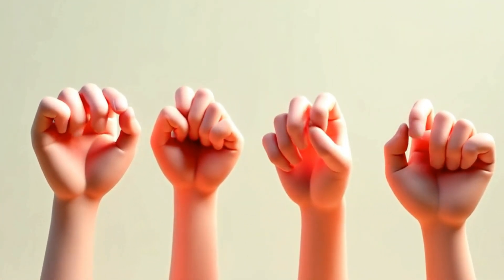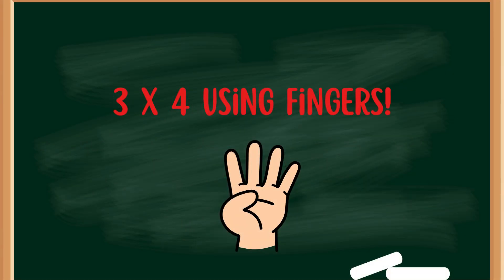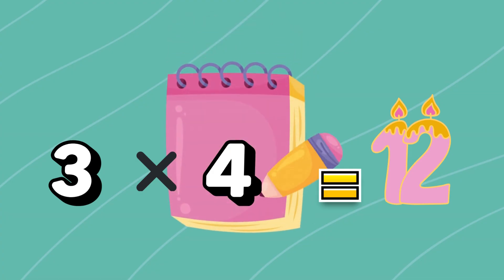Fingers are great for learning. Let's do three times four using our fingers. Hold up four fingers. Now count by three each time. Three, six, nine, and that old twelve. That's right! Three times four equals twelve.